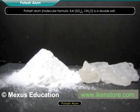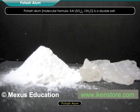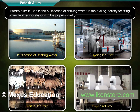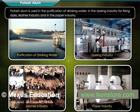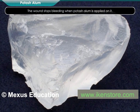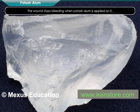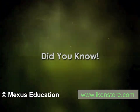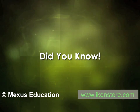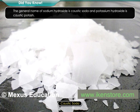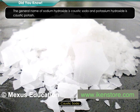Potash alum is a double salt. It is used in the purification of drinking water and in the paper industry. It also stops bleeding when applied on wounds. The general name of sodium hydroxide is caustic soda.